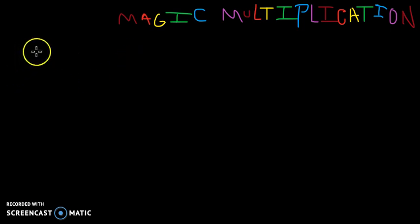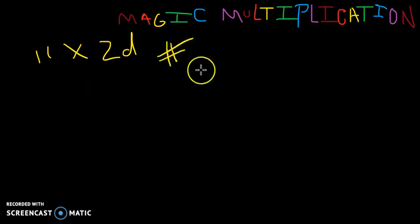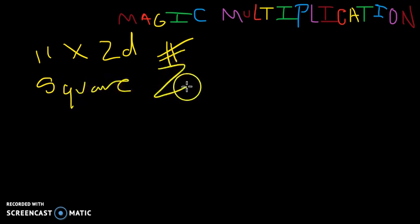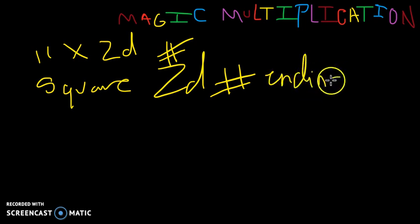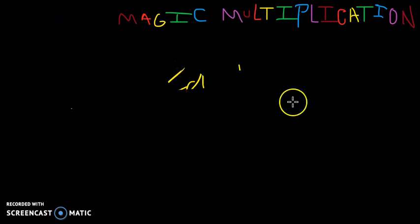So the first thing we're going to do is 11 times any two-digit number, and with enough practice all of this can be done quicker than a calculator. Even this first one I think can be done right away quicker than a calculator. We're going to square a two-digit number ending in 5, and then we're going to square any two-digit number. The first one is very simple, takes no time at all. I was pretty baffled by how simple it was.